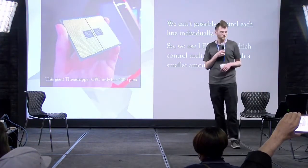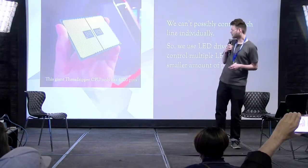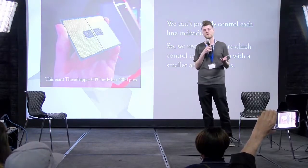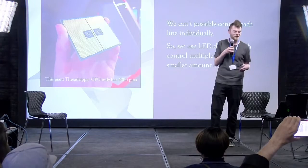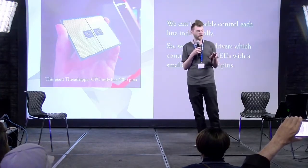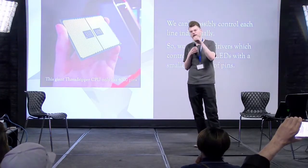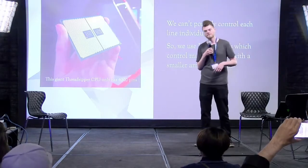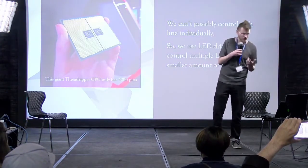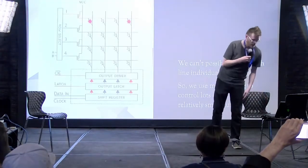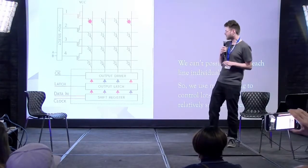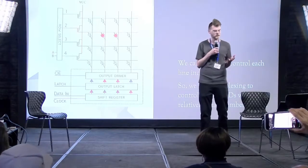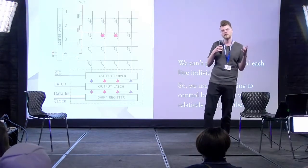So how do we do that? A Threadripper CPU — one of the biggest CPUs you can buy — only has about 4,000 pins. We have no hope of addressing every pixel from individual pins on a microcontroller, microprocessor, or FPGA. So we have to use LED drivers. An LED driver is just a chip, and it uses something called multiplexing — you can multiplex LEDs to control a lot of them with a relatively small number of pins.